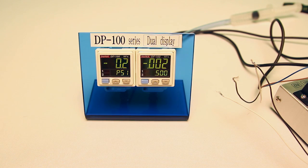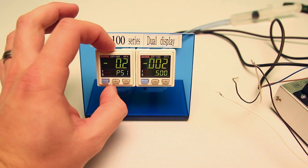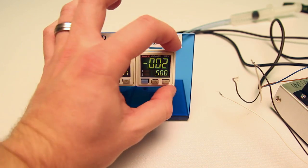Hello everyone, in this video I'll be demonstrating the copy function of the DP-100 series pressure sensor. This function takes a set of parameters from one sensor and transfers it over to a subsensor.